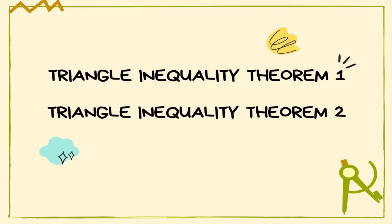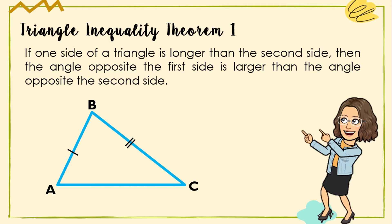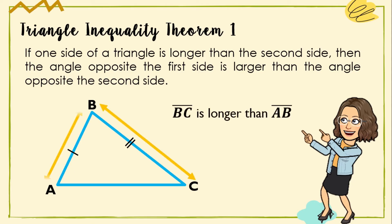Let us start with Triangle Inequality Theorem 1 and Theorem 2. Theorem 1 states that if one side of a triangle is longer than the second side, then the angle opposite the first side is larger than the angle opposite the second side. In the figure, triangle ABC has side BC longer than side AB. By applying this theorem, angle A is larger than angle C.